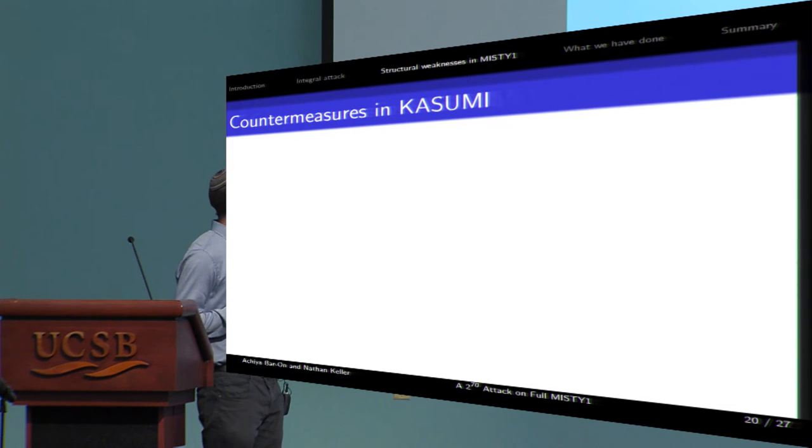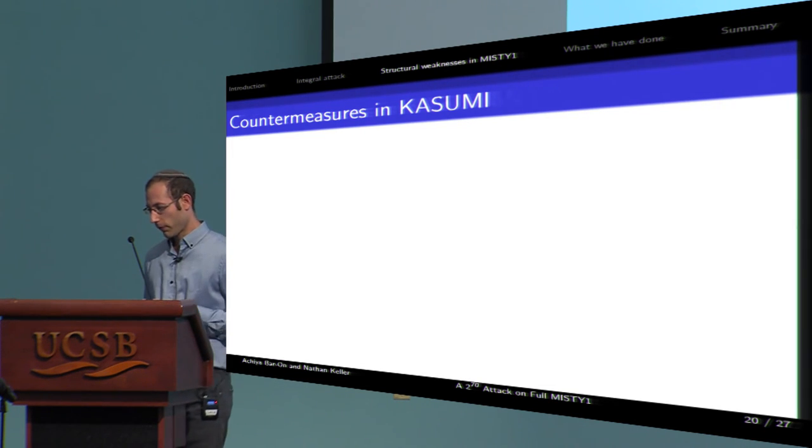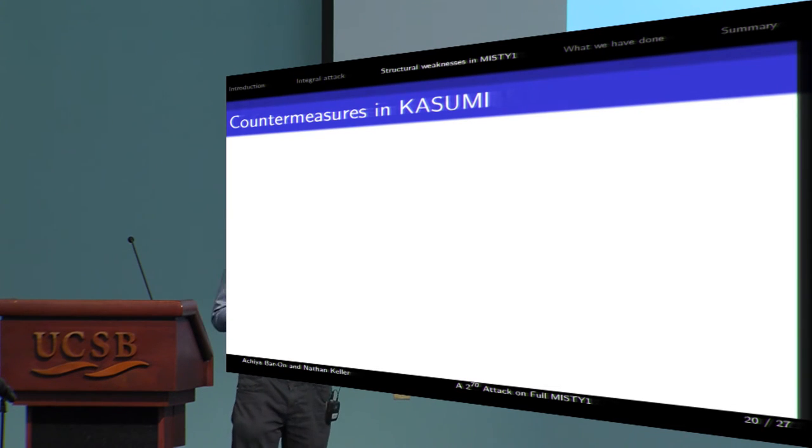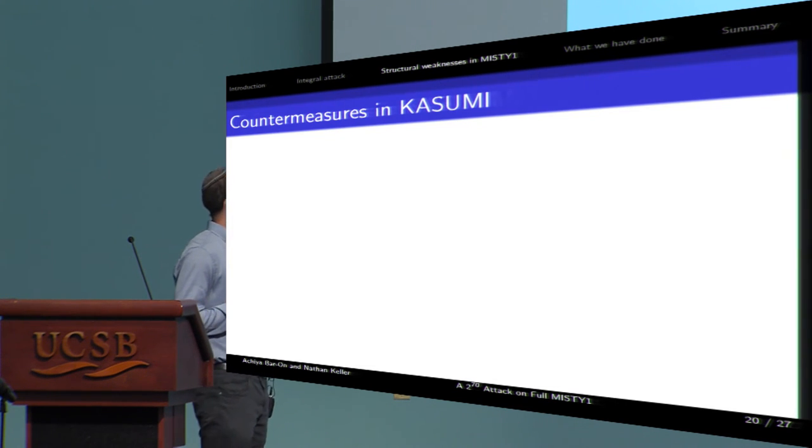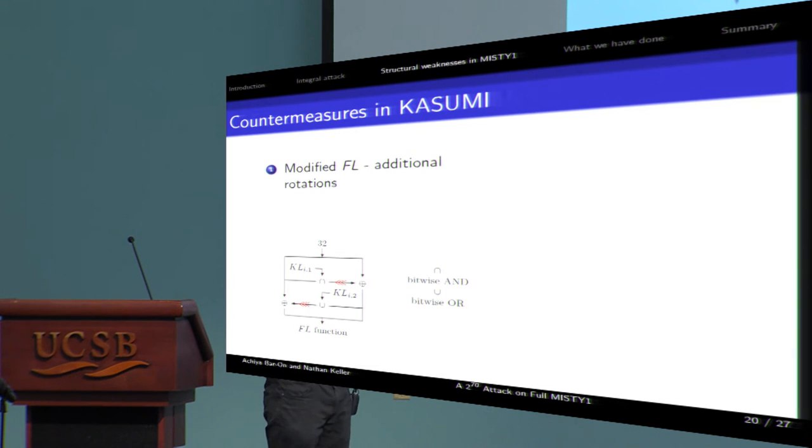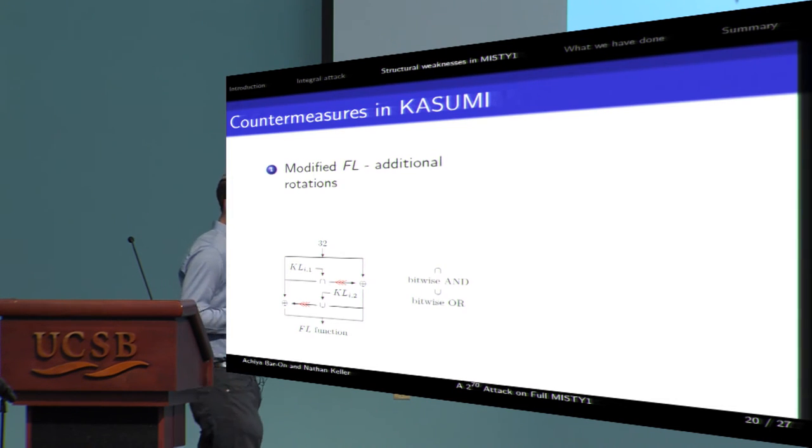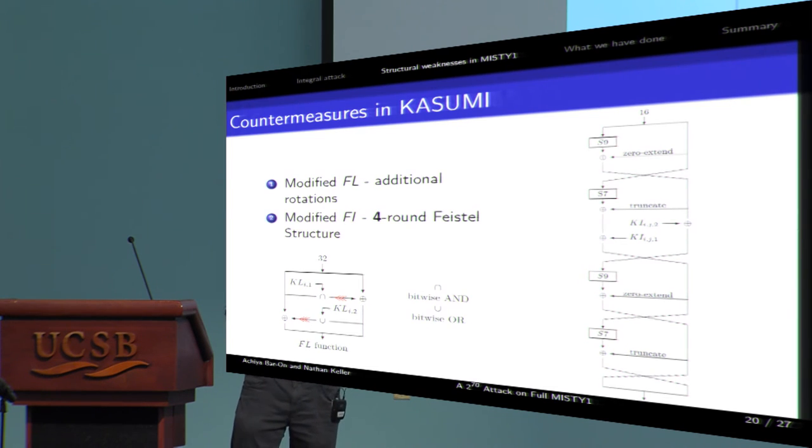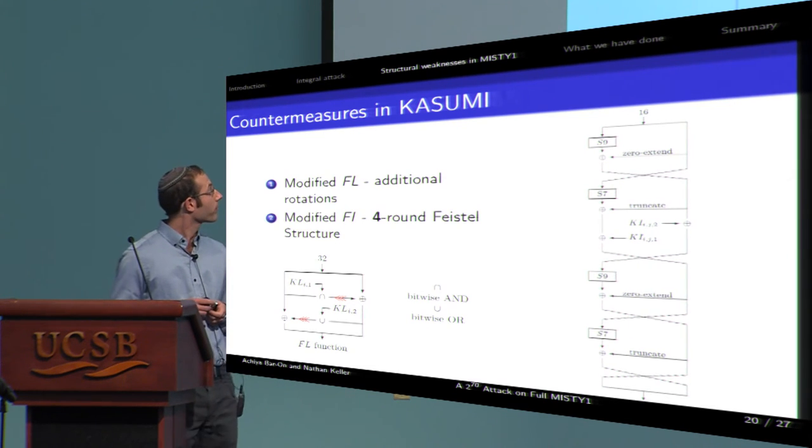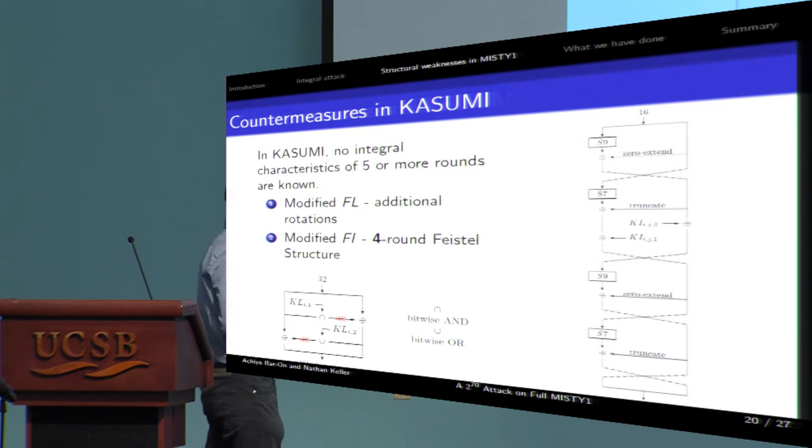Before moving to the next section, it's mostly to mention that the designer of Kasumi, the successor of MISTY-1, made small changes to prevent these weaknesses. The splitting of FL function in MISTY-1 cannot be done in Kasumi, due to additional rotation here and here. As for the three-round Feistel structure, in Kasumi, the FI function is a four-round Feistel structure. Due to these changes and others, no five or more round integral characteristics is currently known in Kasumi.